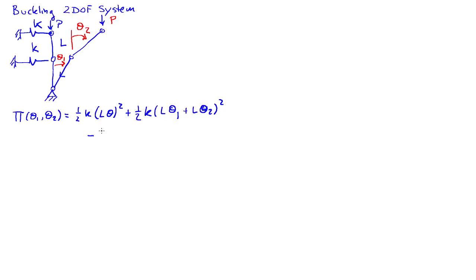Then we also have the potential load, which is going to be P to second order, 1/2 L theta 1 squared + 1/2 L theta 2 squared. That gives me the total potential energy of the system.